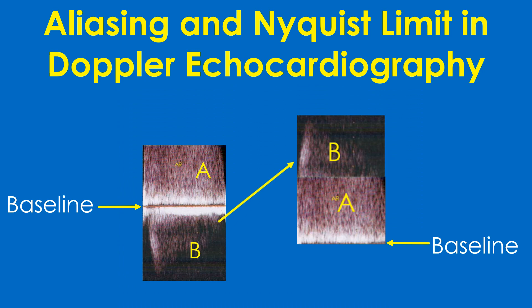This is a diagrammatic representation of what happens when the baseline of the Doppler tracing is shifted downwards. The portion of the AR jet which was below the baseline gets shifted to the cutoff portion of the AR jet above the baseline. A similar change occurs if the maximum velocity setting is changed, as increasing the velocity setting increases the pulse repetition frequency of the HPRF.